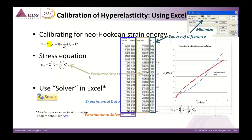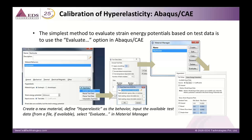One way to calibrate hyper-elasticity is using Excel. In this case, Excel is used to calibrate the C10 coefficient of the Neo-Hookean model by fitting the equation. Another easier option is using the Evaluate option available in Abaqus CAE — input the available test data, click Evaluate from the material manager, and select the range of test data to be used for evaluation to calculate coefficients of your material model.